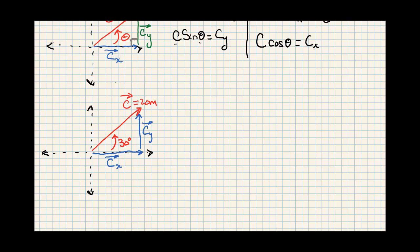So we can go ahead and rewrite this and we can say 20, using our formulas from above, sine 30 equals Cy. So that means that 10 meters is Cy. It means we went vertically 10 meters. That was our portion, our vertical portion of C.